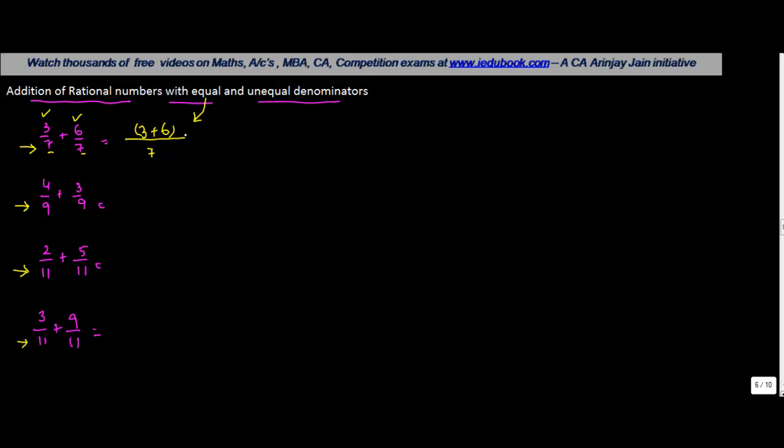This gives you 9/7. Again, common denominator, so the denominator will be 9. Numerators: sum of numerators, 4 + 3 = 7/9. Again, 2 + 5, so common denominator 11, 2 + 5 gives me 7/11. 3 + 9 = 12/11. Very simple and straightforward.